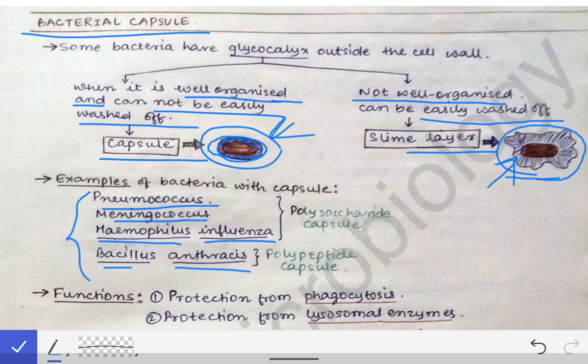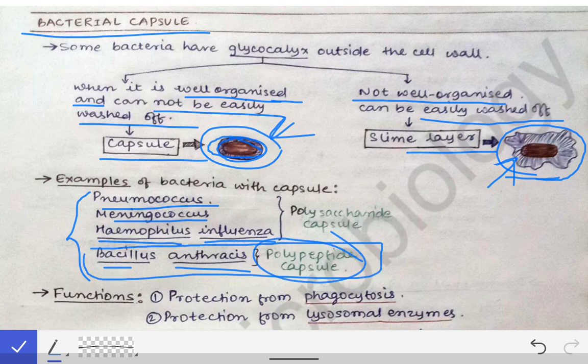One very important point about Bacillus anthracis is that its capsule is a polypeptide capsule. Generally the capsule is made up of polysaccharide, as glycocalyx is a polysaccharide, but in the case of Bacillus anthracis it is a polypeptide capsule. This must always be remembered, as it may be asked in MCQs in university exams.